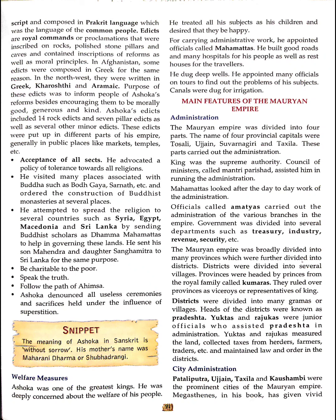He urged people to be charitable, speak the truth, follow the path of ahimsa, and denounced useless ceremonies and sacrifices held under the influence of superstitions. As a welfare measure, Ashoka treated all his subjects as his children. He appointed officials called Mahamatras. He built roads, many hospitals for people, and rest houses for travelers. He dug deep wells and appointed officials on tours to find out the problems of his subjects. Canals were also dug for irrigation.